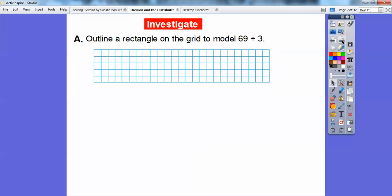Here's an example right here. Let's outline a rectangle on the grid that models 69 divided by 3. So what we're going to start here first, you guys, is since we're dividing by 3, then let's make a rectangle that has width 3 to show 69 squares. So this is going to be my width 3.